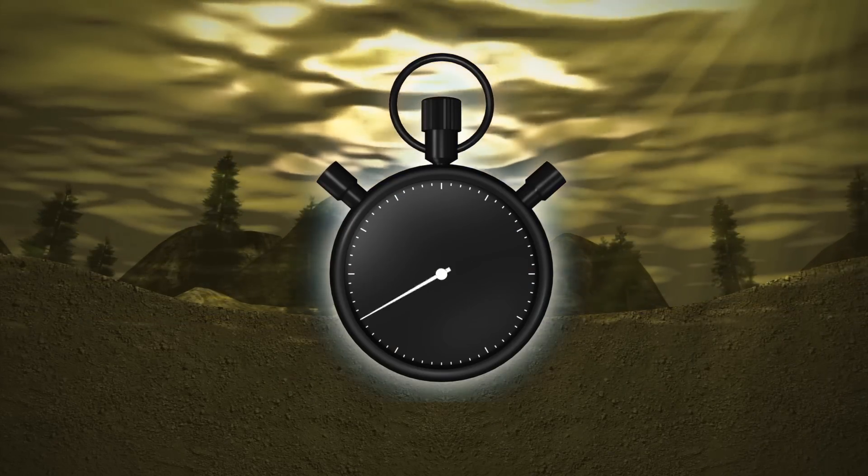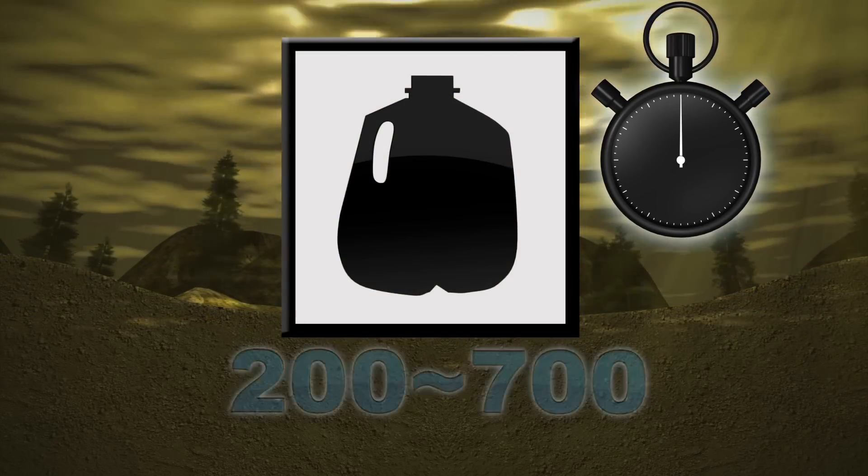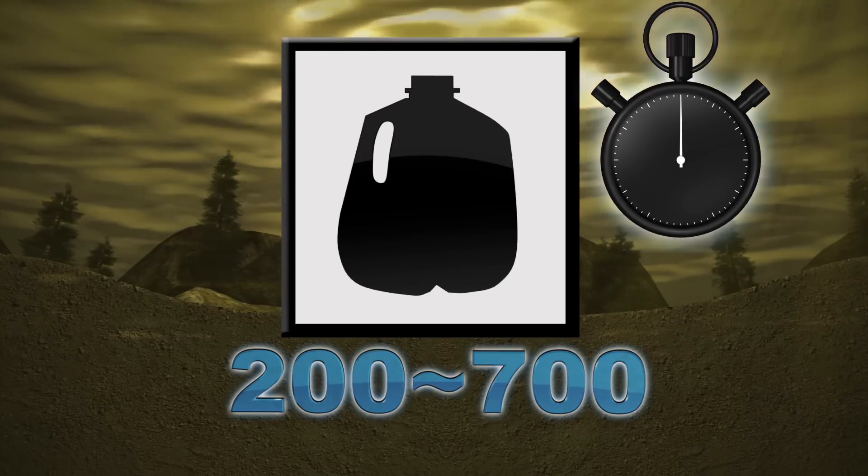At the current time, the mine is discharging anywhere between 200 to 700 gallons per minute of polluted water.